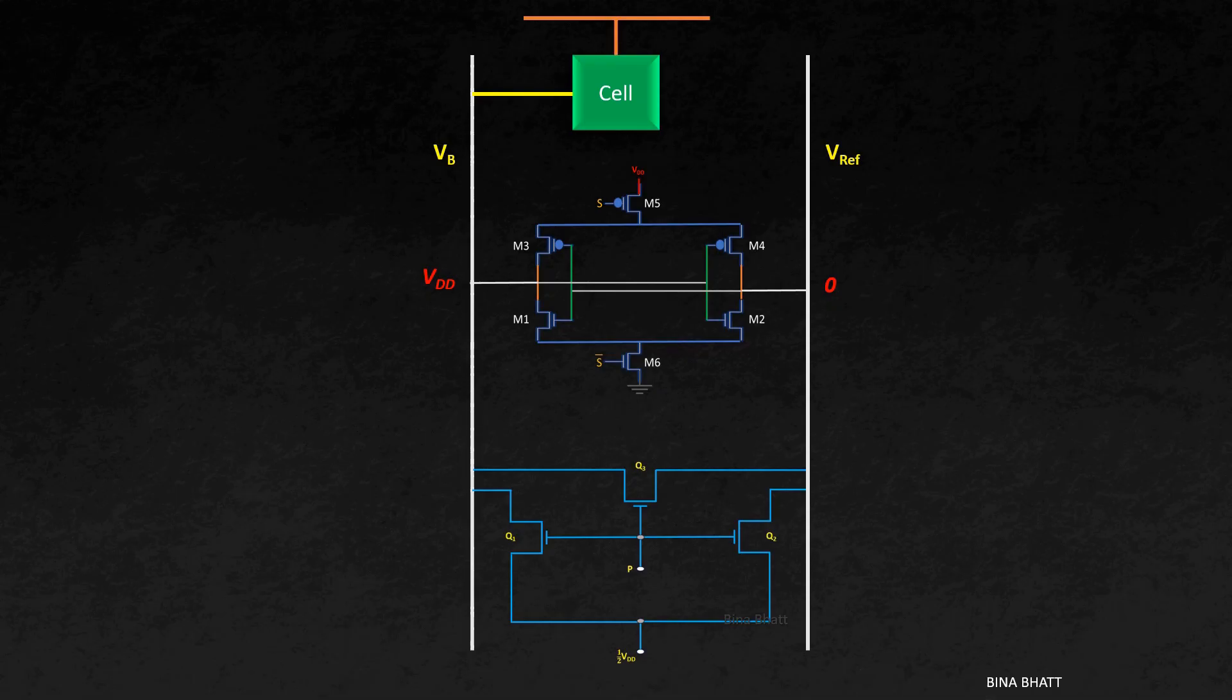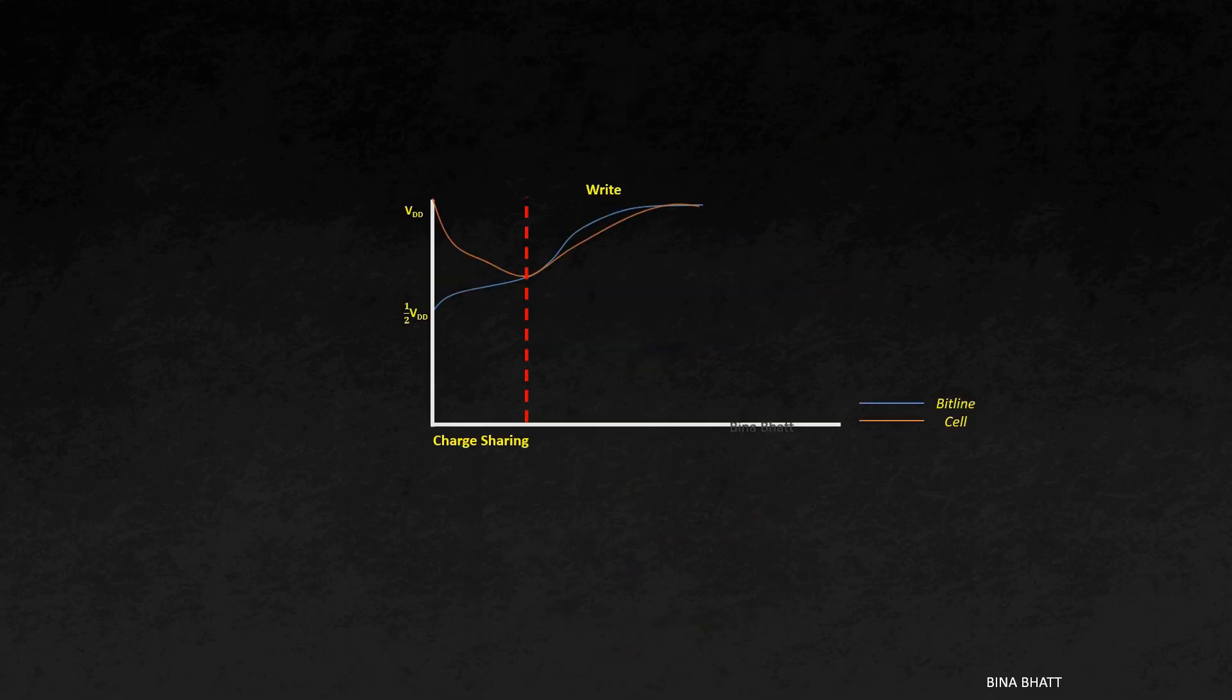Finally, the output of the sense amplifier connected to the bit line restores the lost charge of the cell. Now before beginning the next read cycle, the bit line and reference line are again pre-charged to VDD by 2. So that concludes the read operation.